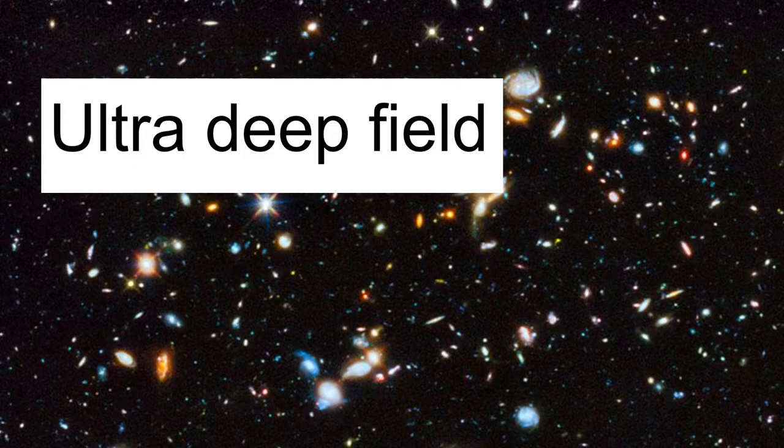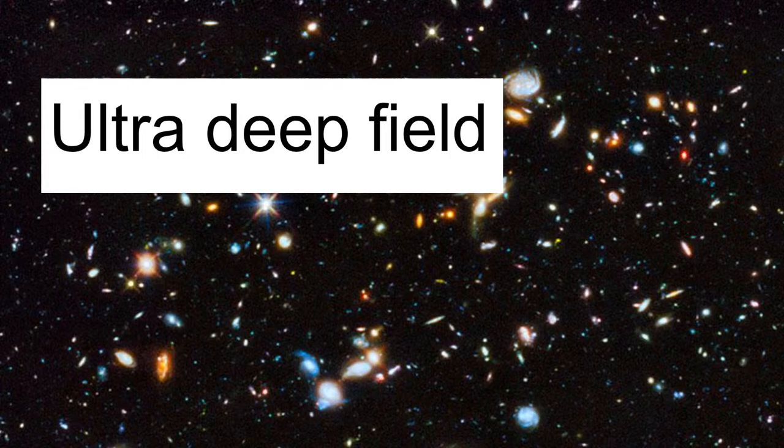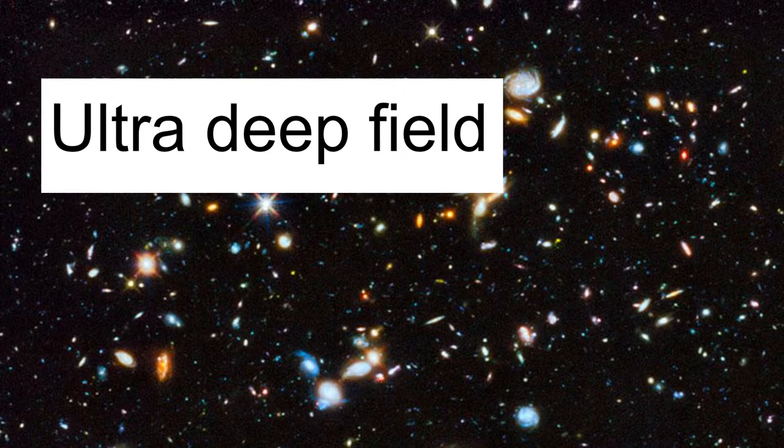This is the Ultra Deep Field. It was taken by Hubble, and it represents the furthest we've been able to see in the universe. The image contains 5,500 galaxies, each one containing hundreds of thousands of stars.